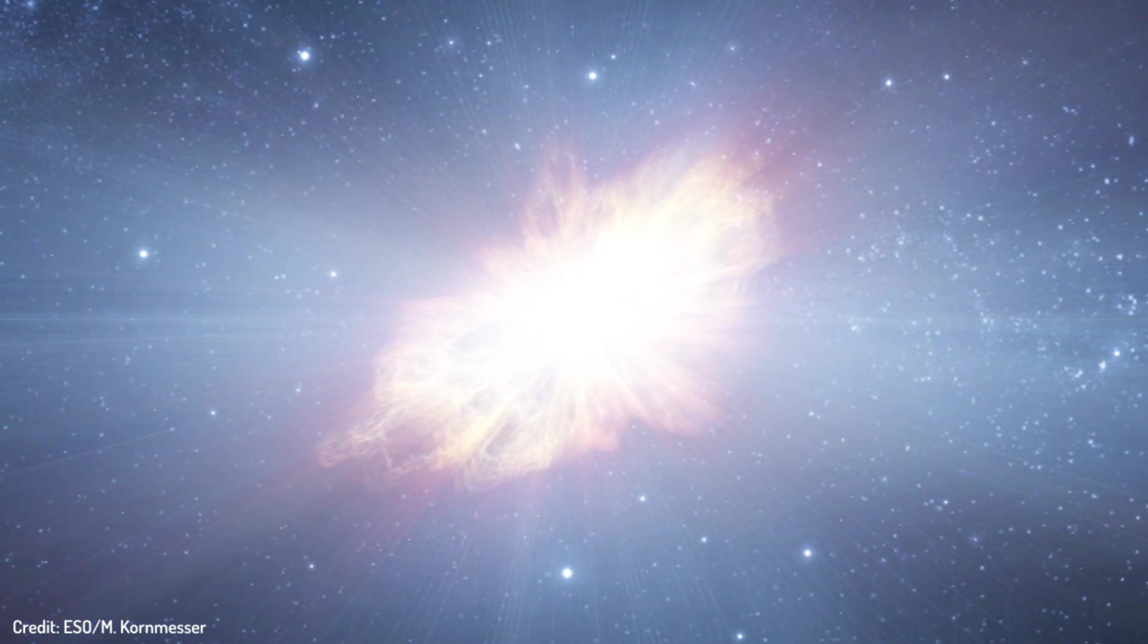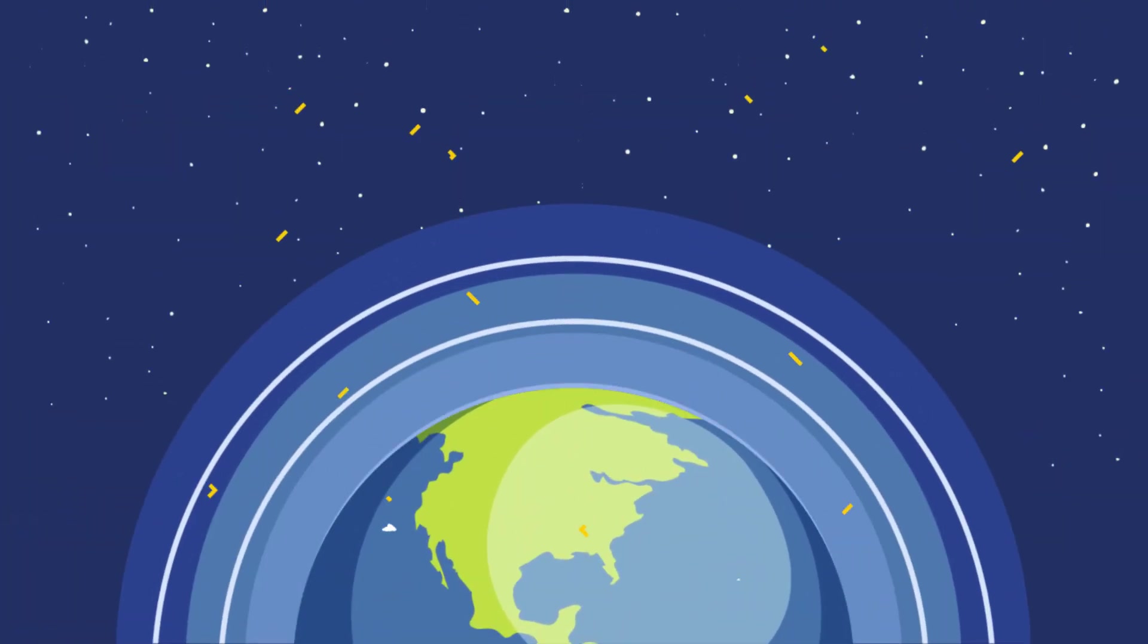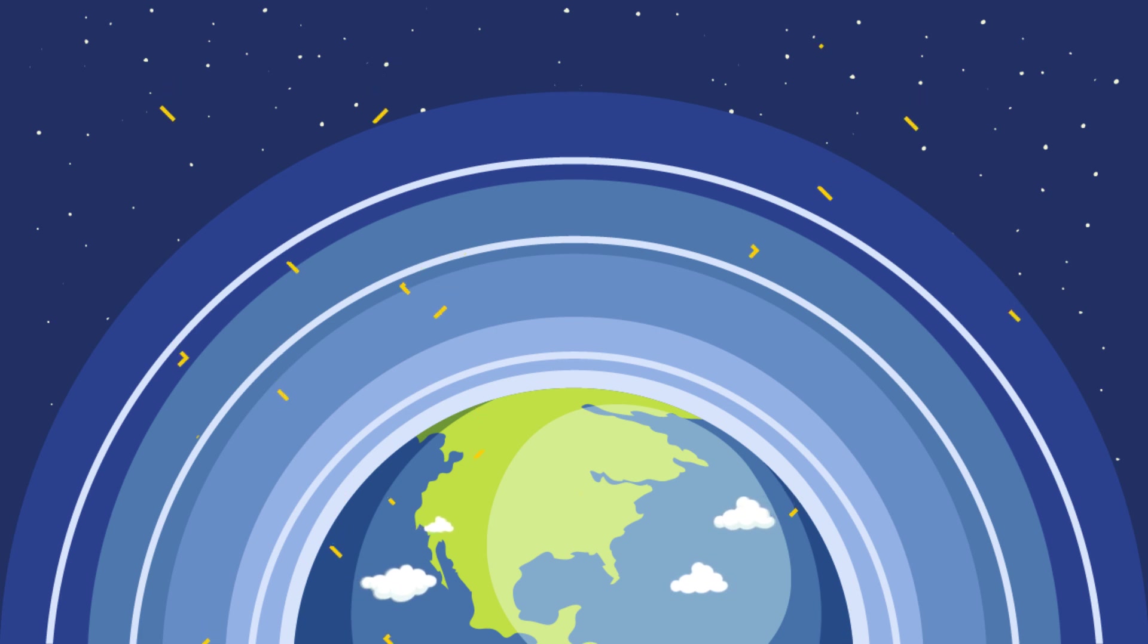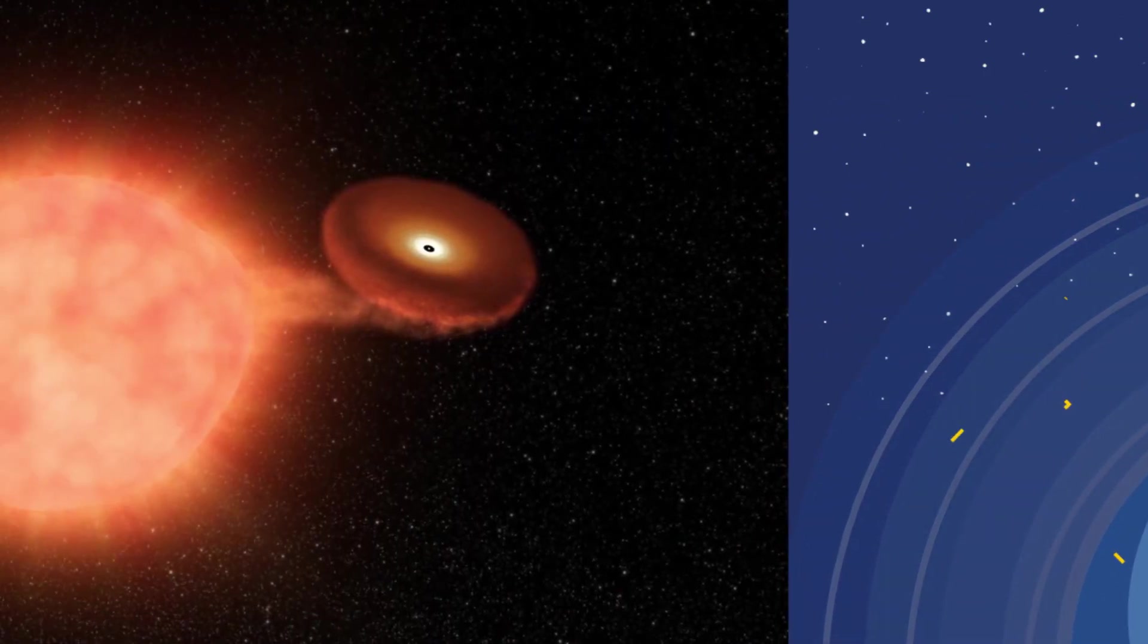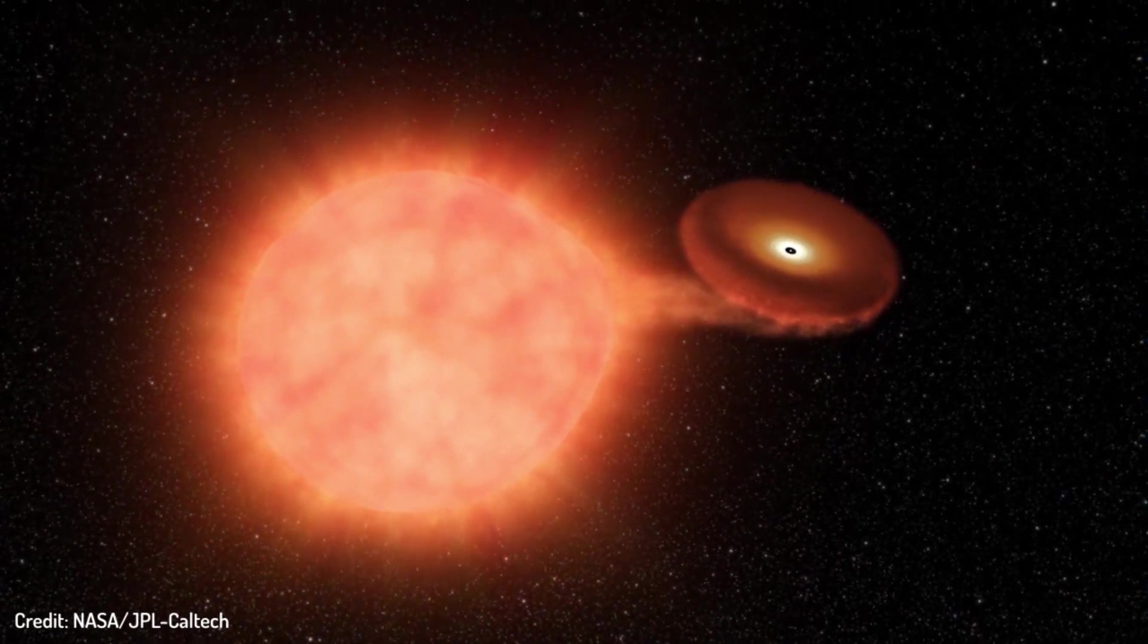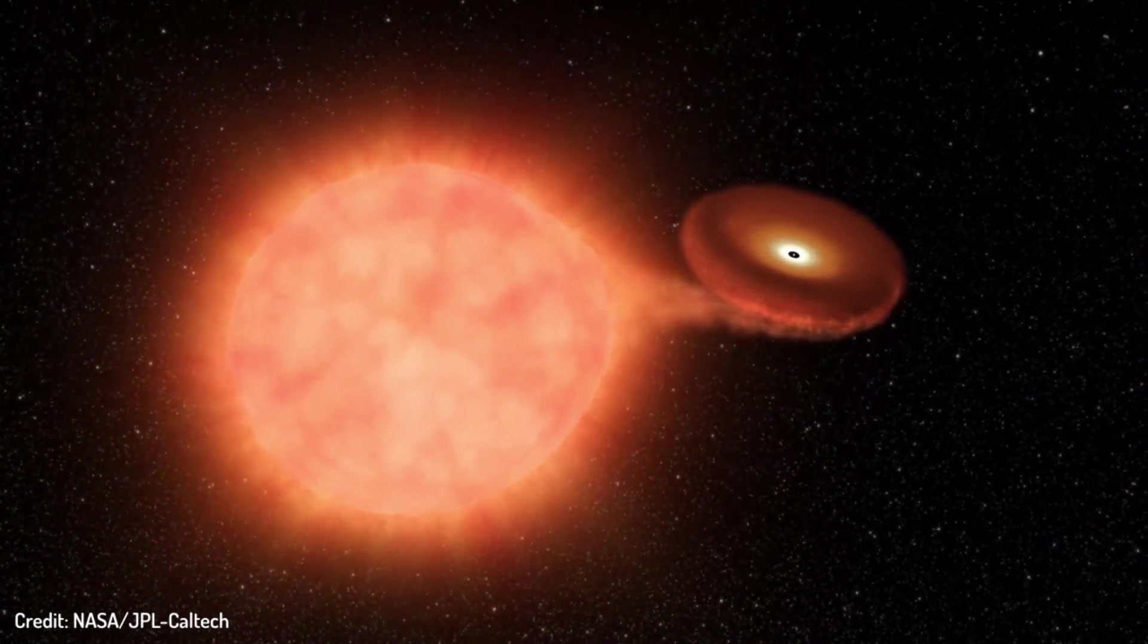Then it could destroy the ozone layer that protects us from solar ultraviolet rays. It also could ionize nitrogen and oxygen in the atmosphere, leading to the formation of large amounts of smog-like nitrous oxide in the atmosphere. Fortunately, we don't have any type 2 supernova stars located within 50 light years from Earth.